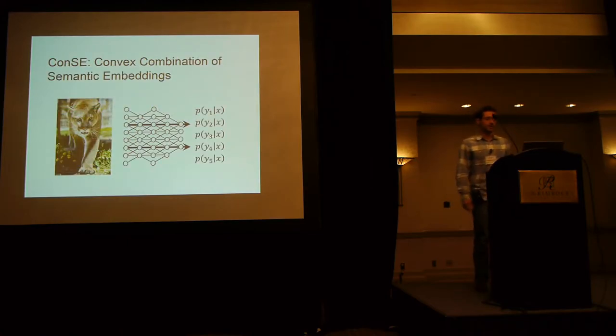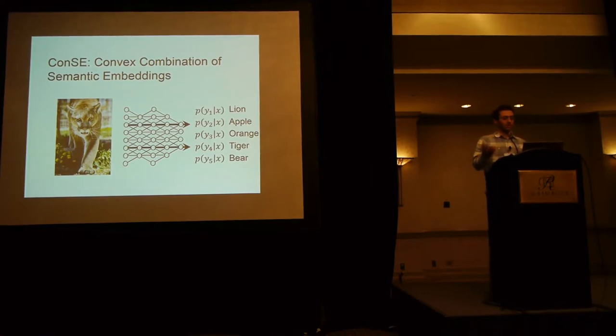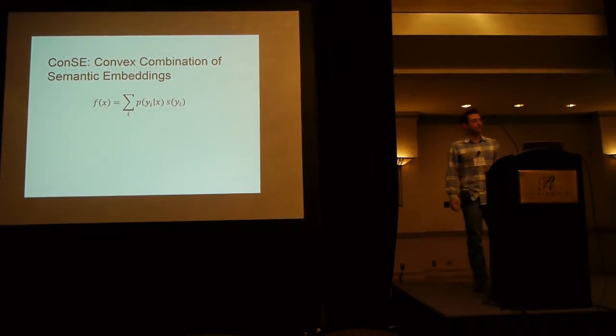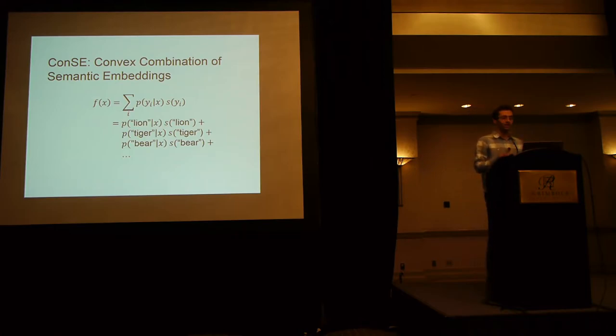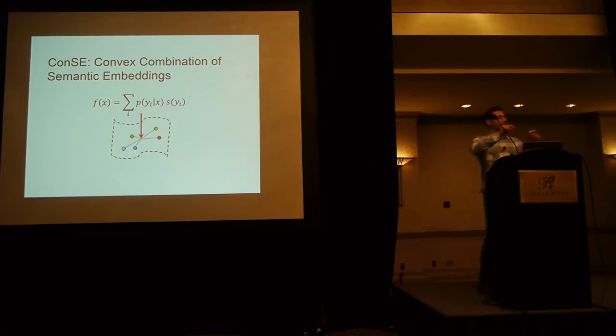Now, here is our approach, which is deceptively simple. We call this convex combination of semantic embeddings. We run the probabilistic classifier on the images to get these conditional probabilities, which tell us, for example, how likely this image contains a lion, apple, orange, etc. Then what we do is that we simply take a linear combination of the semantic embeddings weighted by their conditional probabilities. So, for example, this is going to be probability of lion given image times the embedding for the word lion plus probability of the word tiger given image times the embedding of the word tiger, etc. This gives us a point in the middle of the embeddings for all of these training points, so we call this convex combination of semantic embeddings because all of the probabilities sum to one. Now, we do a k-nearest neighbor search with query f(x) to find the k-most relevant labels, and that's essentially the classification.